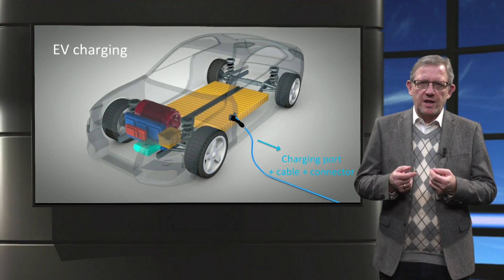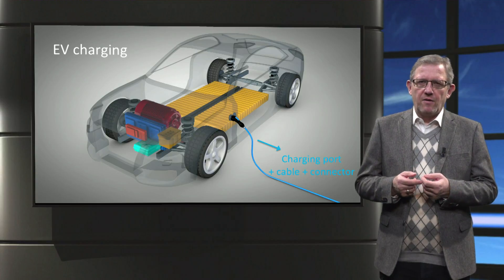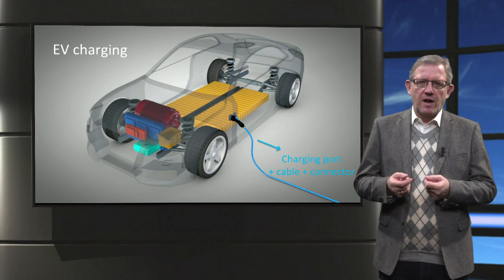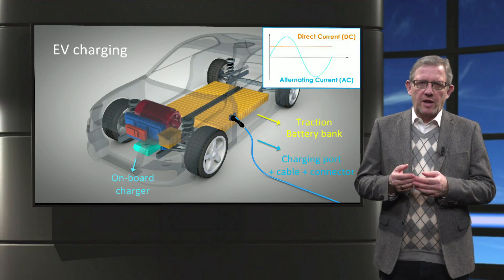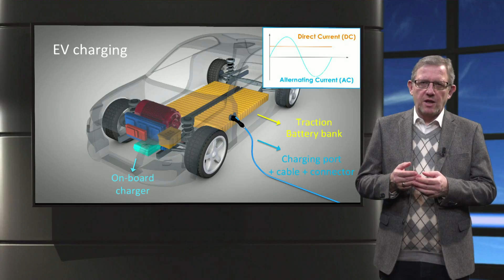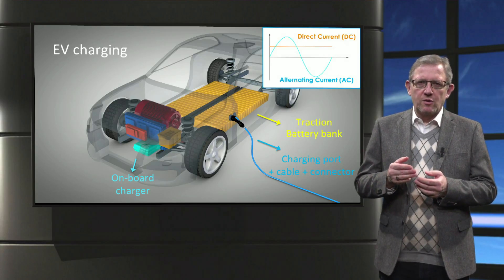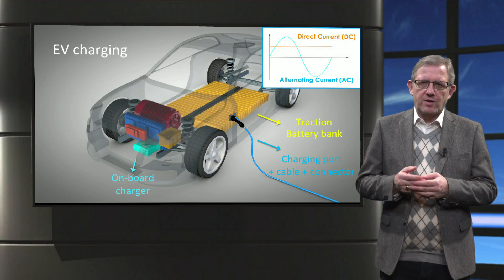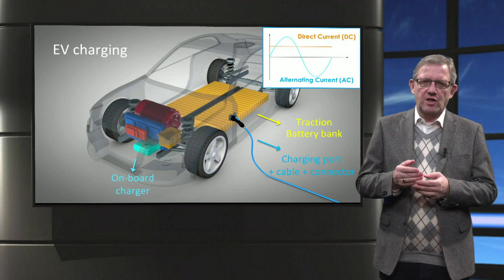Hence, to charge an electric vehicle, AC power from the electricity grid is fed to the car via the vehicle inlet using the charging cable and connector. The onboard charger, which is an AC to DC power converter, converts the AC power to DC power suitable for charging the battery. What we have seen till now is referred to as AC charging.